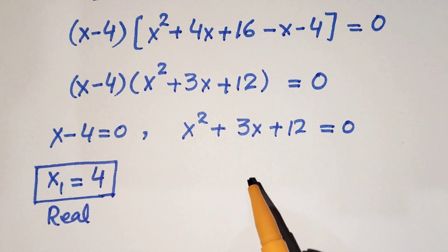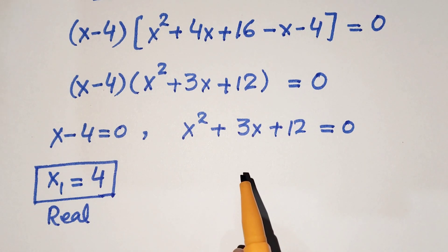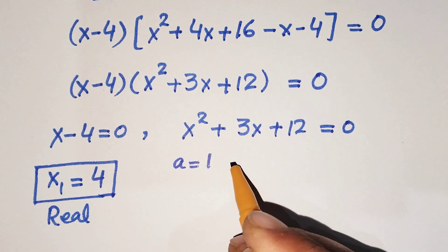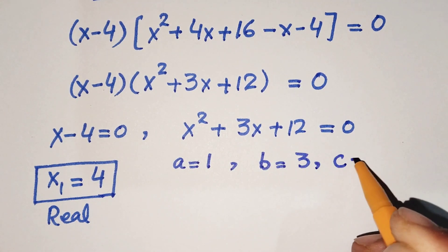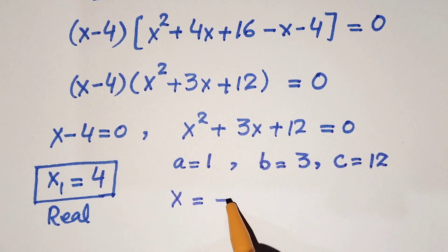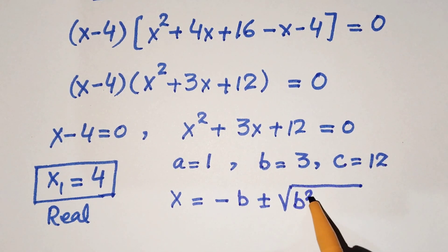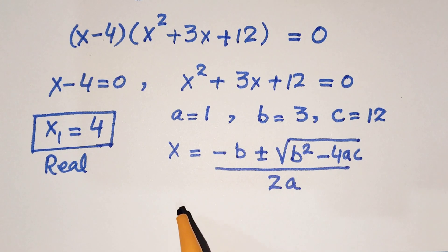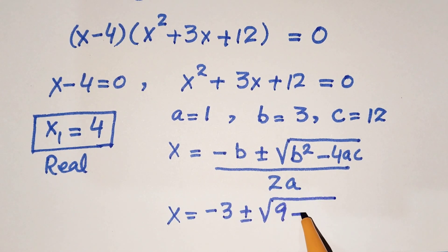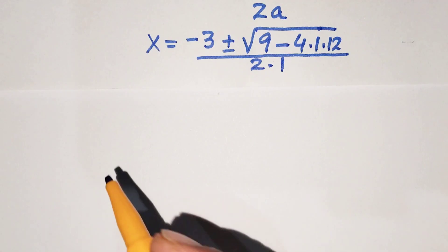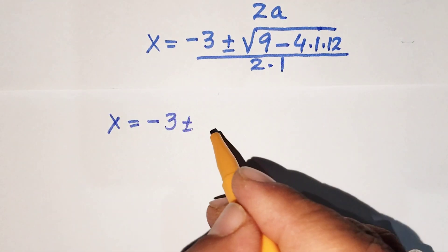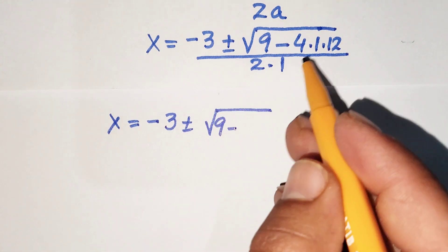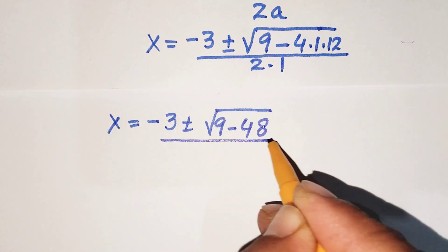For the second condition, it is a simple quadratic equation, so we use the quadratic formula. Here a equals 1, b equals 3, and c equals 12. The quadratic formula gives x equals negative b plus or minus square root of (b squared minus 4ac), all over 2a. Substituting: x equals negative 3 plus or minus square root of (9 minus 4 times 1 times 12), all over 2 times 1.